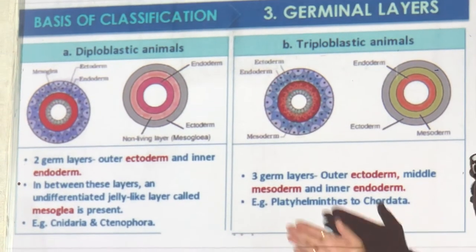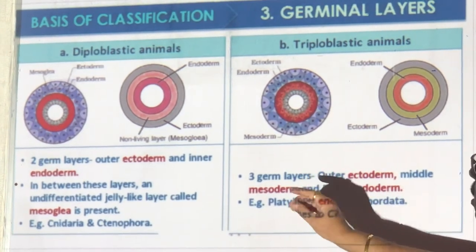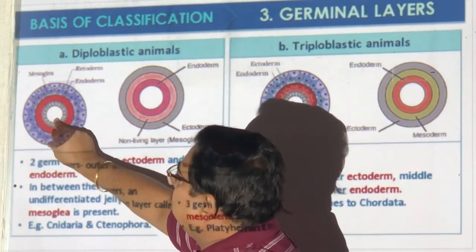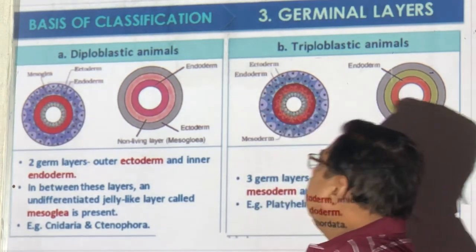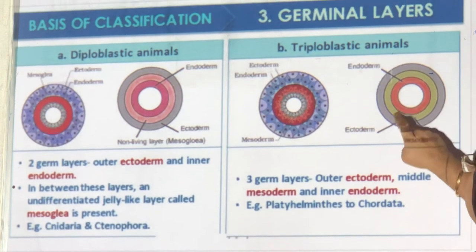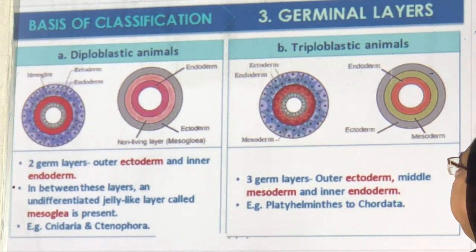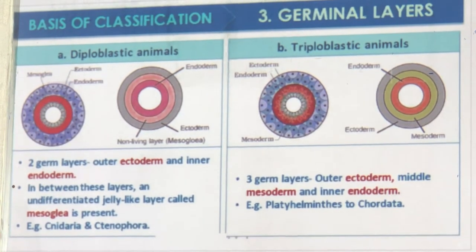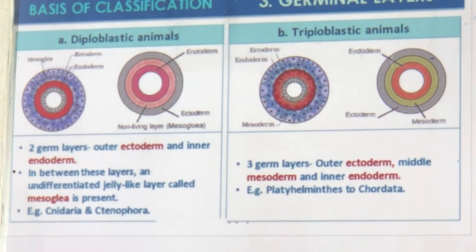Diploblastic animals have ectoderm and endoderm but no mesoderm. A jelly-like mesoglea is present which sticks them together — Hydra is the example. Triploblastic animals have three layers: ectoderm, endoderm, and mesoderm. From Platyhelminthes to higher animals, all have three layers. More layers means more types of organs and more specialized organs.